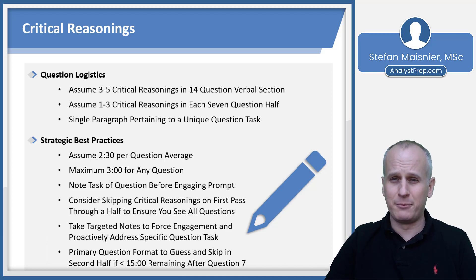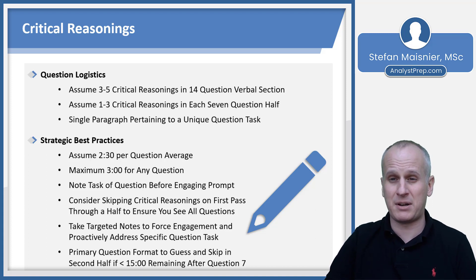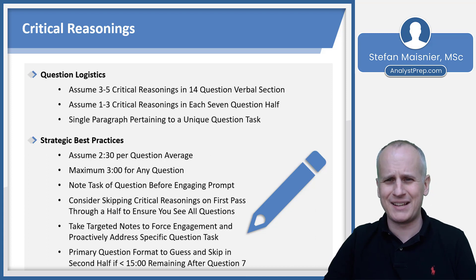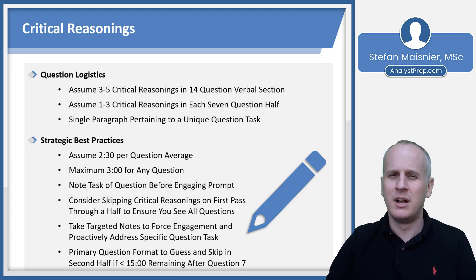If you're behind pace — under 15 minutes moving into the second half starting with question eight — you may consider blindly guessing or quickly eliminating on these critical reasoning questions so you've got time to see everything else. You're just looking for opportunities to see everything more than anything else on this test.